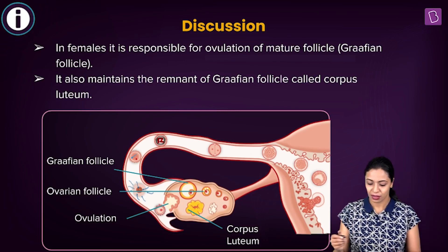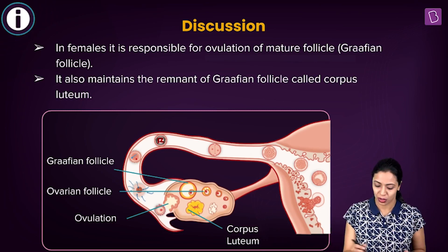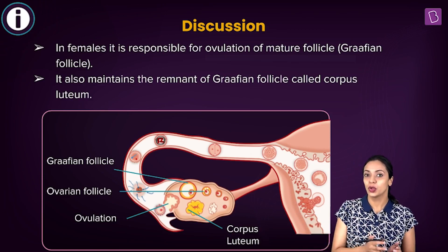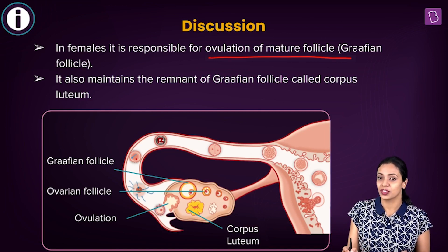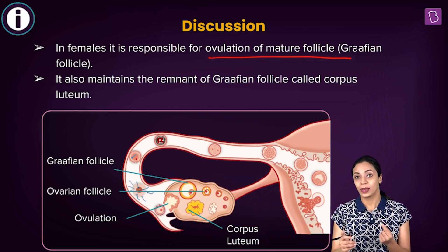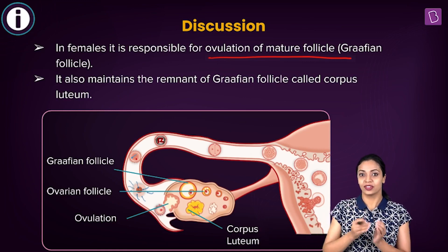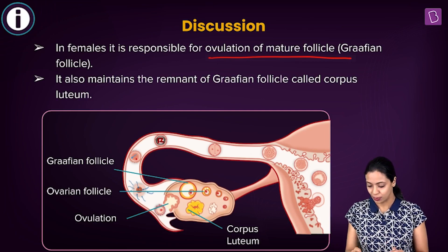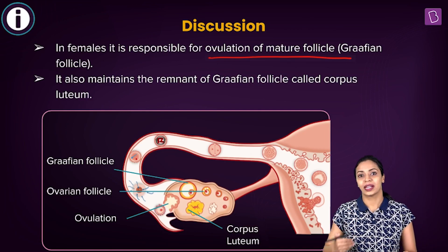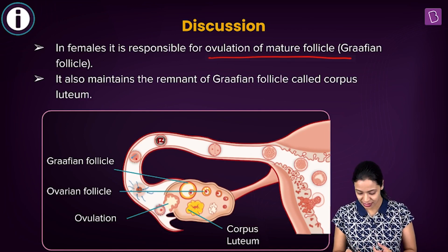In females, LH performs two important functions. First, it causes rupturing of the mature graafian follicle in the ovaries, resulting in ovulation — the egg is released from the follicle. Second, after the graafian follicle has ruptured and released the egg, the remnants in the ovary form the corpus luteum, which secretes progesterone. This corpus luteum is maintained by the luteinizing hormone. So in females, LH is responsible for ovulation and maintenance of the corpus luteum.